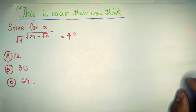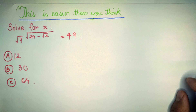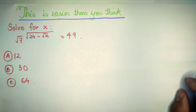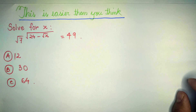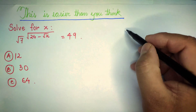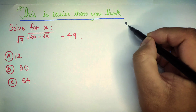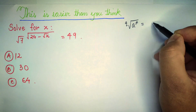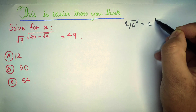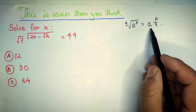Hey guys, today we will be doing a very tricky question: root over 7 to the power (root over 24 minus root over x) is equal to 49. We need to find the value of x. The options are: A) 8, B) 12 or 30, or C) 64. First of all, we need to know this formula: Q-root of a to the power P is equal to a to the power P by Q. We'll be using this formula.